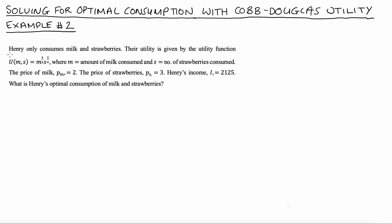The question is: Henry only consumes milk and strawberries. Their utility is given by u equals m to the power of 4 over 6 times s to the power of 3 over 4. In this function, m is the amount of milk consumed, s is the number of strawberries consumed, the price of milk p_m equals 2, the price of strawberries p_s equals 3, and Henry's income i equals 2,125. What is Henry's optimal consumption of milk and strawberries?